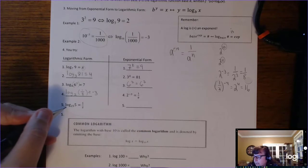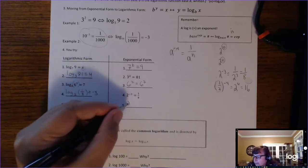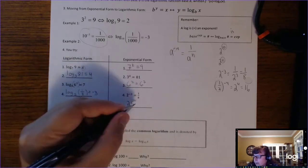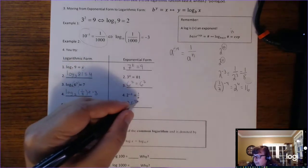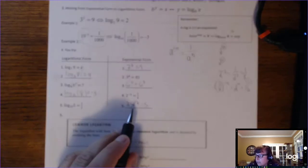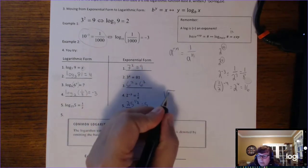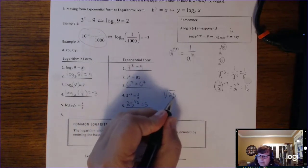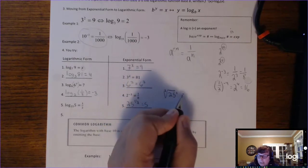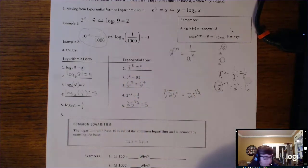The last one: log base 25 of 5 equals 1 half. The base is 25, the power is 1 half, and it equals 5. In exponential form, that's 25 to the 1 half equals 5. That's a rational exponent — the square root of 25 has an index of 2 and an understood exponent of 1. You can use rational exponents to get things out of square roots.